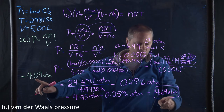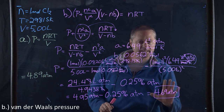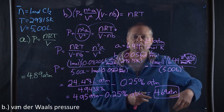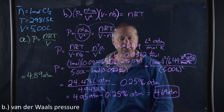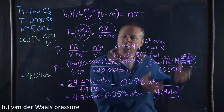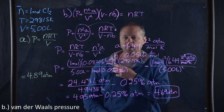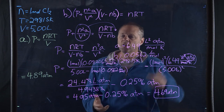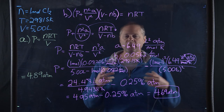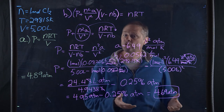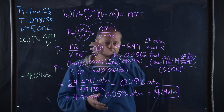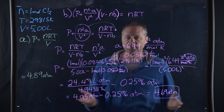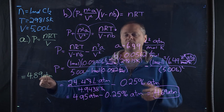Notice that the two results are quite different — 4.89 atm from ideal vs. 4.69 atm from Van der Waals. The reason is that the Van der Waals equation accounts for interactions between chlorine molecules. As these molecules are attracted to one another, they cannot collide with the walls of the vessel at the same velocity because they're hindered by attraction to other chlorine molecules, reducing the pressure compared to the ideal gas prediction.